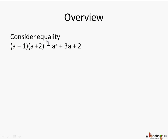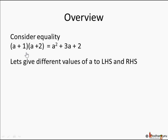Consider this equation: (a + 1)(a + 2) = a² + 3a + 2. There is a left hand side and a right hand side with an equal to sign. There is an algebraic expression on the left side (a + 1)(a + 2) and on the right side a² + 3a + 2. If we give different values of a to both sides, let's compare what we get.